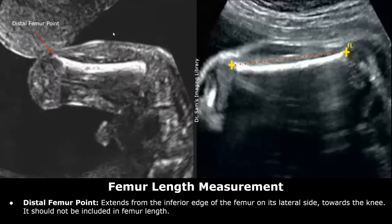The distal femur point is a short extension seen from the inferior edge of the femur on its lateral side towards the knee. The knee is in this direction. This point should not be included in the femur length measurement.